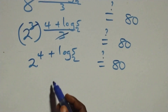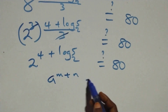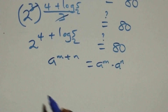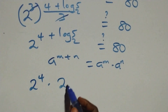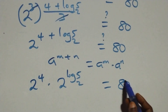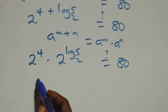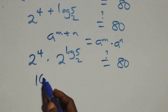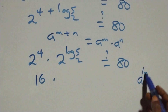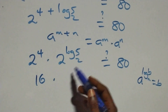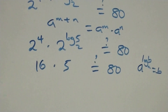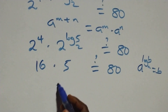We apply the law of indices: a raised to power (n plus m) is a raised to power n times a raised to power m. So we have 2 raised to power 4 times 2 raised to power log 5 base 2. Using the identity a raised to power log b to base a equals b, we get 16 times 5, which is 80. Is it equals to 80? Yes!